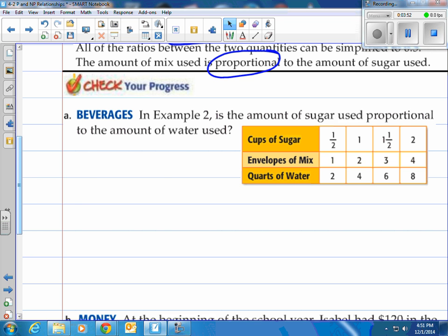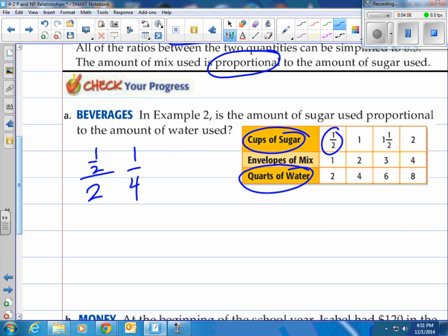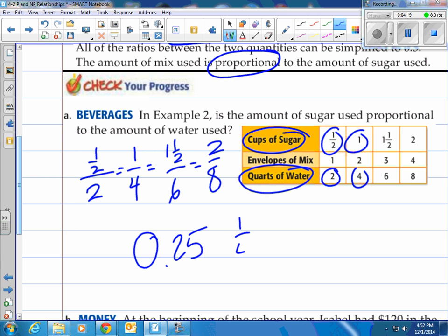So in example two, is the amount of sugar used proportional to the amount of water used? So sugar and water used. Simple. Let's create our fractions, which are our ratios here. One half over two, one over four, and I'm just grabbing these right here. Then I'm doing one and a half over six, and two over eight. Are those all equal? Well, guess what? They are. They all equal 0.25, which is one fourth. Since they're all equal, then we say it's proportional.